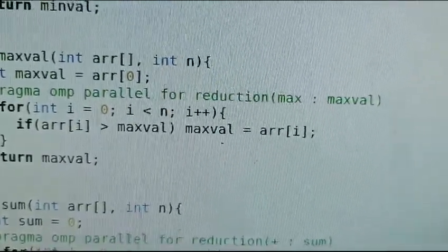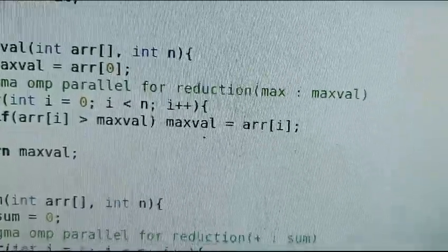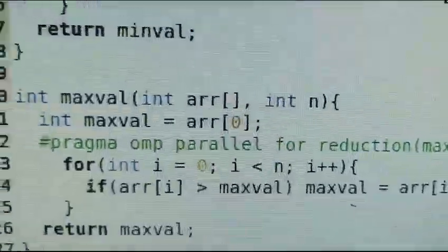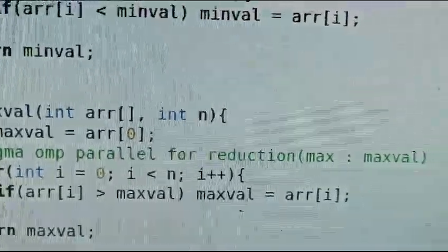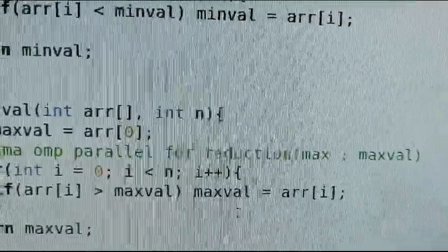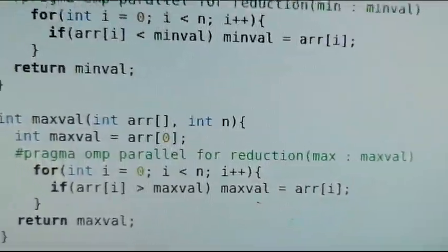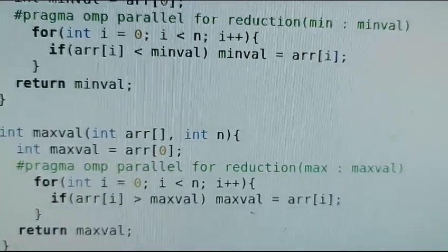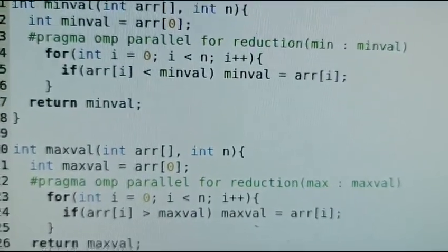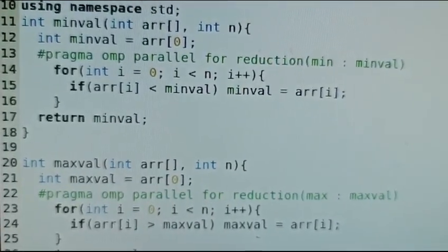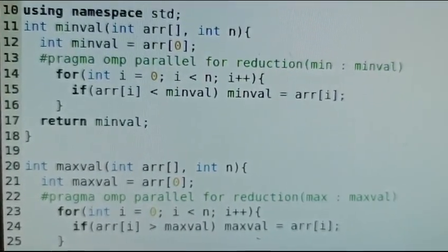Next hash pragma omp parallel for reduction(max : maxval). Again this directive specifies the following for loop should be executed in parallel using multiple threads. The reduction max colon maxval clause indicates that each thread should maintain a private copy of maxval and update it with maximum value it finds in its portion of loop.